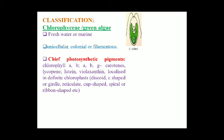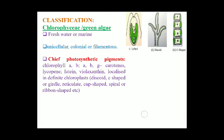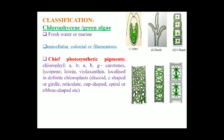The chief photosynthetic pigments in this group include chlorophyll a and chlorophyll b, then we have alpha carotene, beta carotene, gamma carotene, lycopene, lutein, and violaxanthin, which are localized in definite chloroplasts.